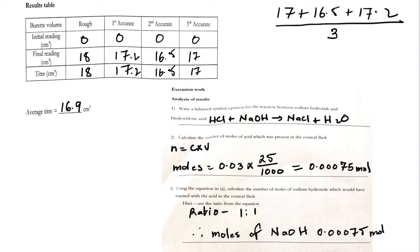Finally, using the moles and the average titre, calculate the concentration of NaOH. Using C = n ÷ V: concentration = 0.00075 ÷ (16.9 ÷ 1000), converting 16.9 centimeter cube to decimeter cube gives 0.0169 dm³. Therefore, the concentration of sodium hydroxide = 0.00075 ÷ 0.0169 = 0.044 mol per decimeter cube.